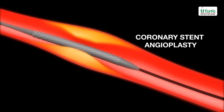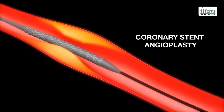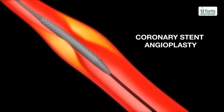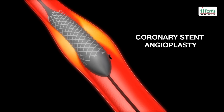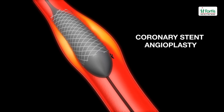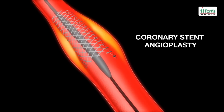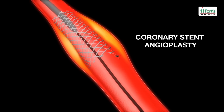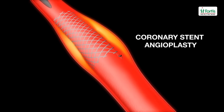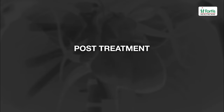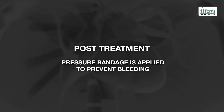A collapsed stent is placed over the deflated balloon catheter as it is inserted into position. When the balloon is inflated, the stent expands and locks itself into place. The deflated balloon and catheter are then withdrawn, leaving the stent behind to hold the artery open permanently.